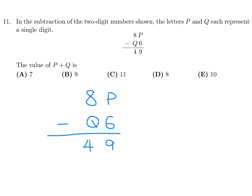P minus 6 is 9. Obviously it's not a single digit — there's a carry. We had to carry over a 1 in order for that to happen. So it's some number with a 1 in front of it, and if you subtract 6, you get 9. That's obviously 15, so P is 5.